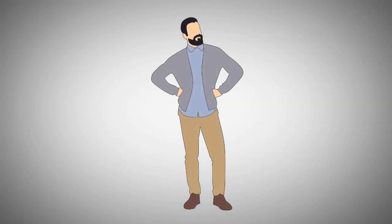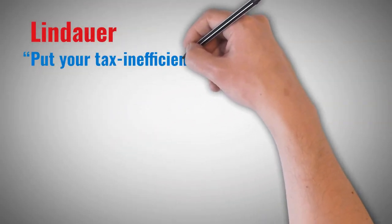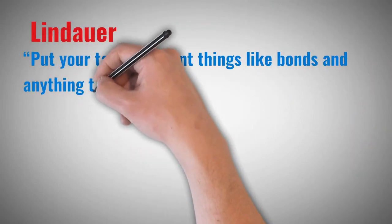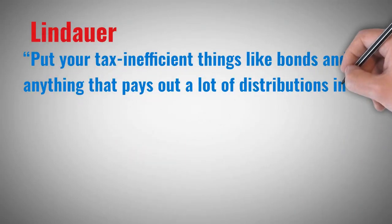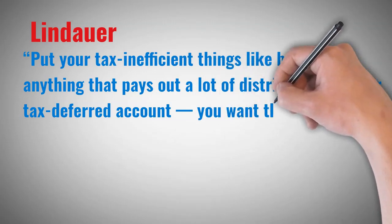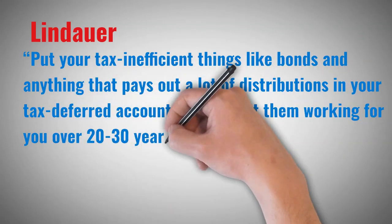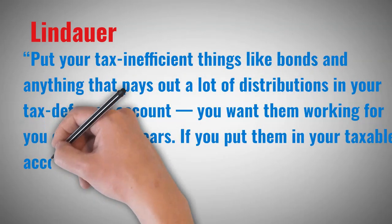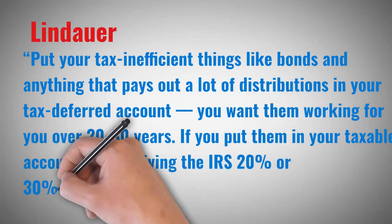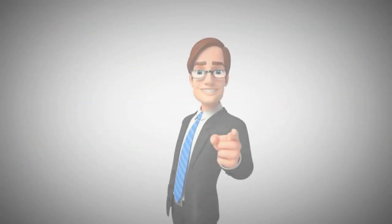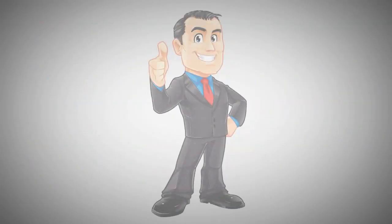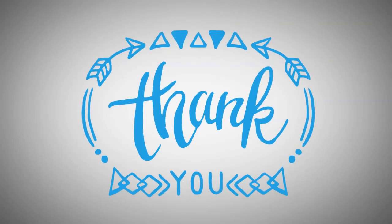When you think about where to invest, Lindauer said, put your tax inefficient things like bonds and anything that pays out a lot of distributions in your tax-deferred account, you want them working for you over 20-30 years. If you put them in your taxable account, you're giving the IRS 20% or 30% every year. Tax-efficient investments, on the other hand, should go in your taxable account. Thank you.